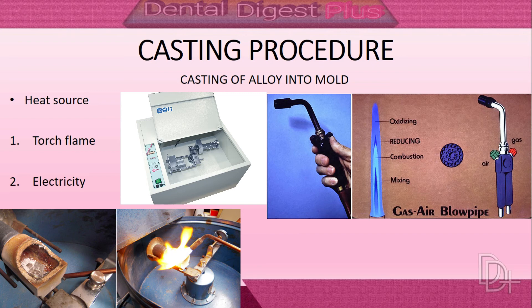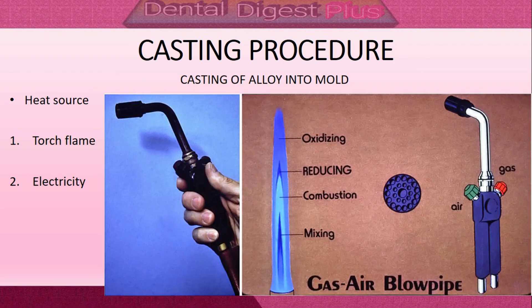In torch melting, mixtures of natural and artificial gas such as oxygen and oxy-acetylene gas are used. In electric melting, electric resistance melting or induction melting methods are used. Torch heating is less fast than electric heating, but electric heating can easily overheat the alloy. When using a blow torch, we need to consider the zones of the flame: mixing zone, combustion zone, reducing zone, and oxidizing zone.